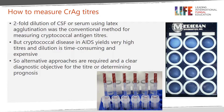Below is an image of the CRAG lateral flow assay, which is a more simple point-of-care test to detect cryptococcal antigen. Both the latex agglutination and the CRAG lateral flow assay can be quantified using titers, and both are performed using serial dilution. The titer is the last positive test before the dilution turns negative. Titers across the latex agglutination and lateral flow tests are not comparable.